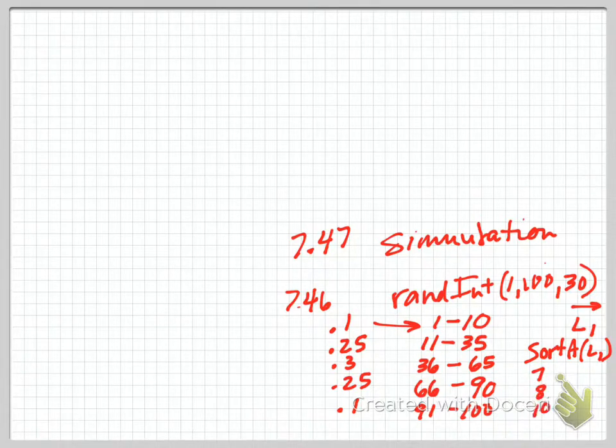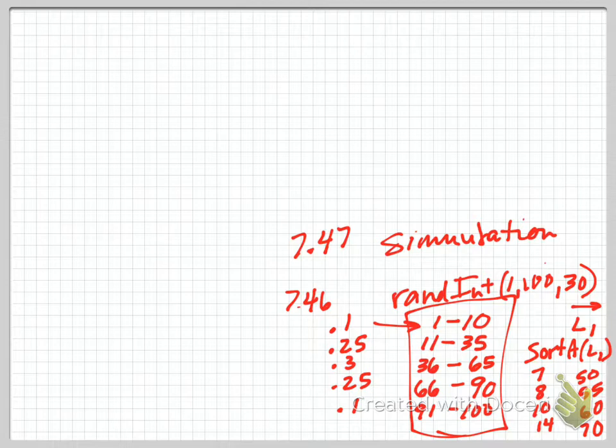If I got a number return that was maybe it said 7, 8, 10, 14, 50, 55, 60, 70, then I'd look back at what I wrote down over here and just correspond those to the proportions. So in this little thing I just made up I have two numbers out of my 30 that are in this top category. I'd have 10, two more in the second category there, 1, 2, 3 in the .3 category, and then 1 in the .25, and then it's asking you to make proportions out of that and just compare it to what we did in 7.46.